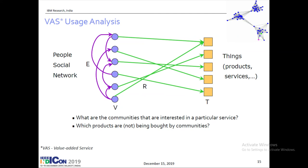I can ask a simple question: what are the communities that are interested in a particular product? Can I say here is a clique or a star community where all these people are interested in this service? I can ask this kind of question because we have a social network lens applied to the data. When we look with social network eyes, we can also ask: which products are not being bought by a given community? These questions arise naturally with social network analysis.